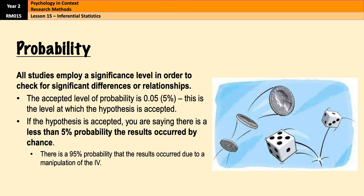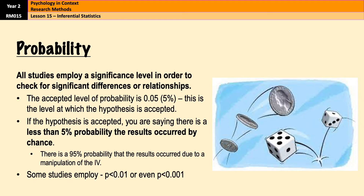Now, 0.05 doesn't always have to be the level of probability. Some studies have a much smaller one — P equals 0.01 or even 0.001. It always depends on what the researchers are trying to achieve. As a general rule, you will be given the significance level, so you will always know what level you are working at. And if you don't get told it, then it's always 0.05.